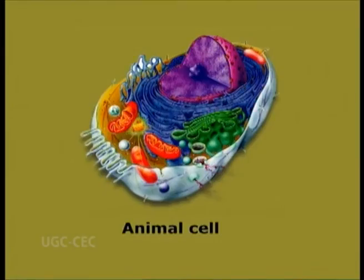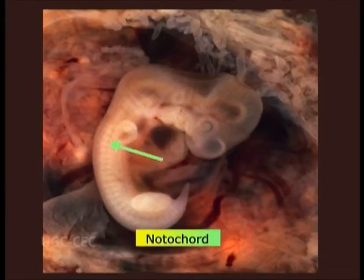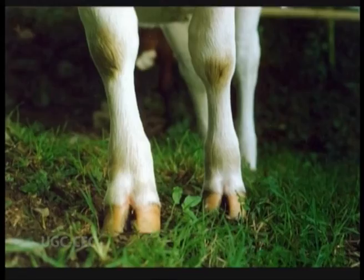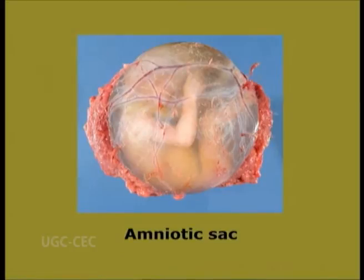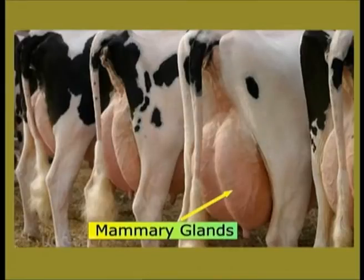Mammals have been classified under Kingdom Animalia because of animal cells, under phylum Chordata because of the notochord and vertebral column, under superclass Tetrapoda because of 4 limbs, under clade Amniota because of amnion and other extra embryonic membranes, and lastly under class Mammalia because of the presence of mammary glands.